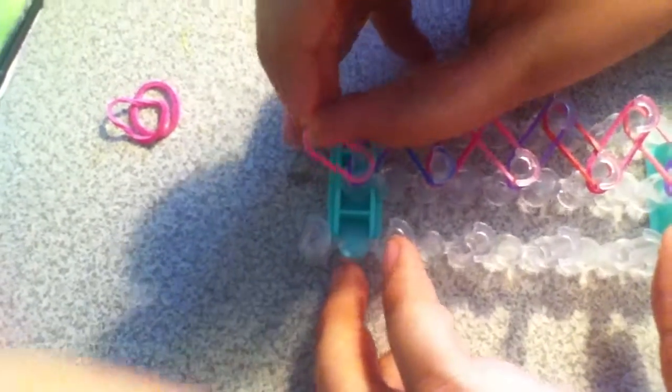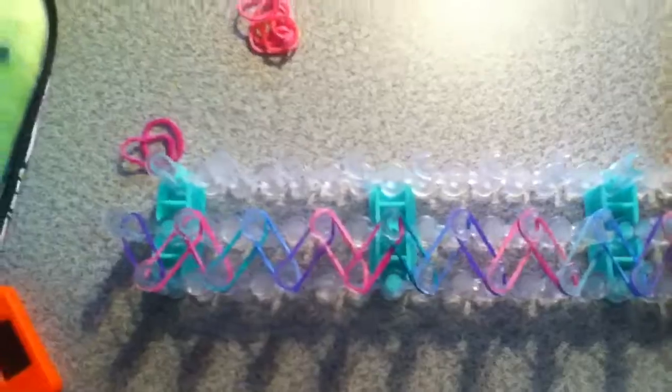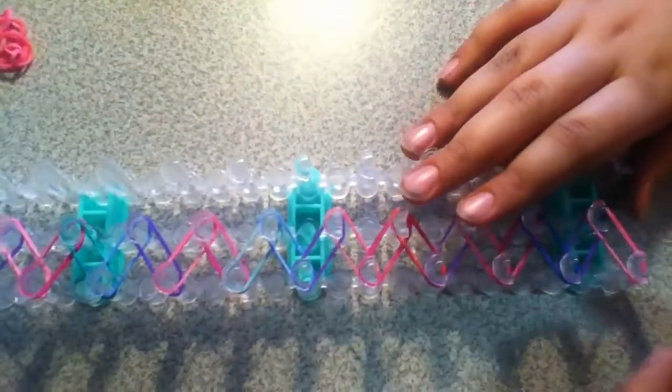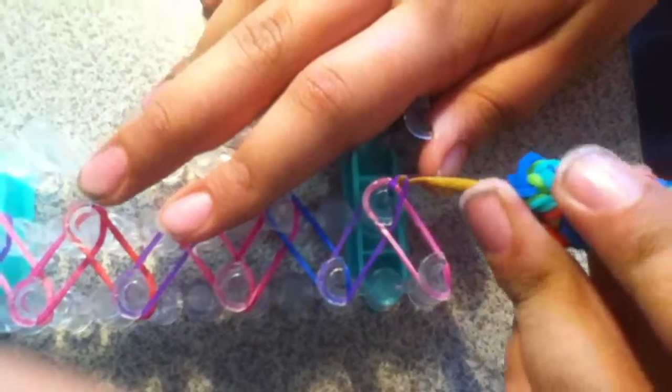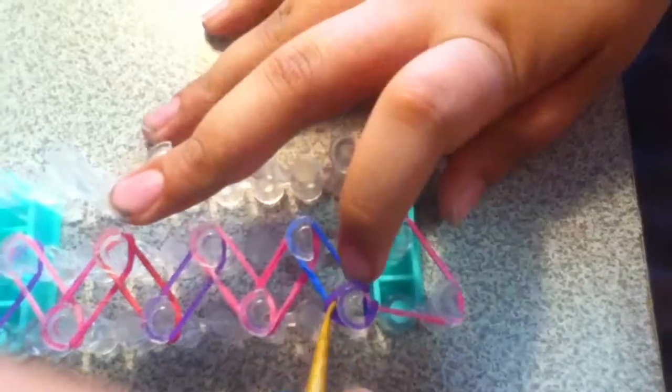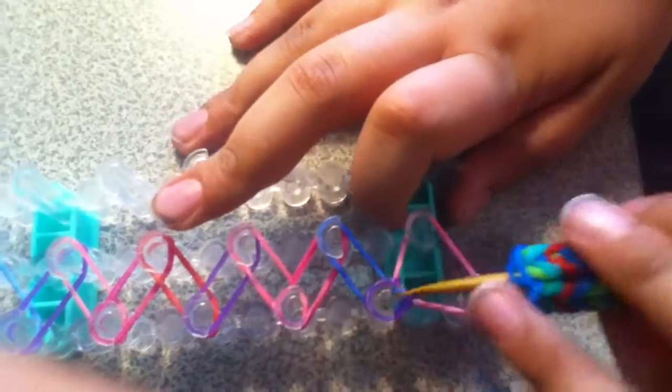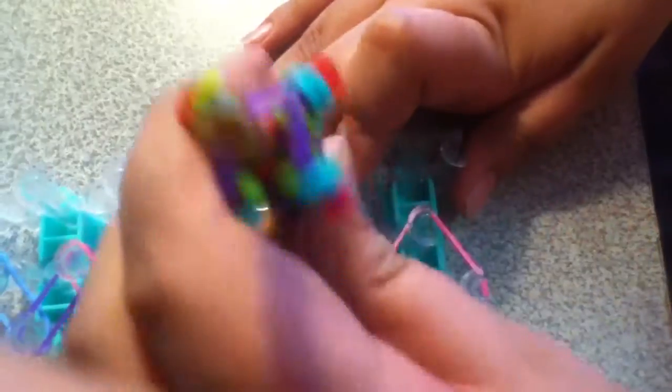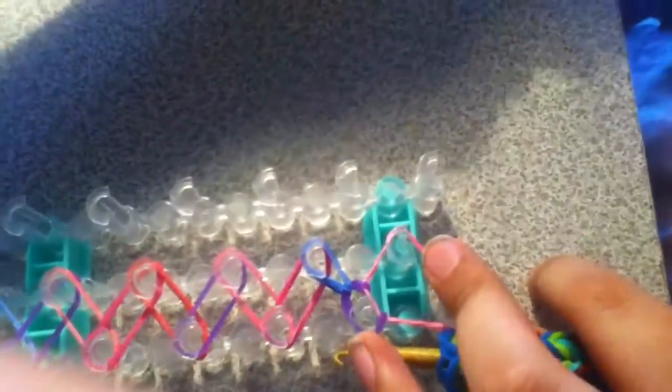So when you want to finish, just grab a band. So now turn it around, so the peg is facing you this way. So now get a triple band and just place it here. And do it again. Do a band and place it here. So now repeat this step, all the way up.